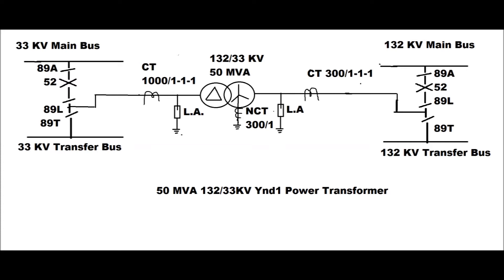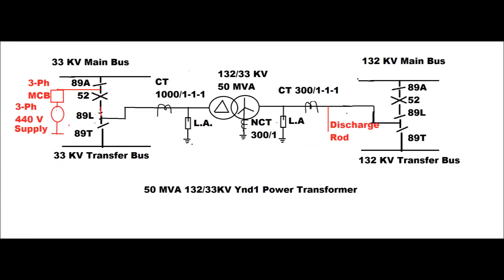The CT full load current for HV is approximately 219 amperes and for LV approximately 875 amperes. The CT ratio for the neutral CT is 300/1. For the stability test arrangement, a three-phase 440 V supply is given by means of an MCB before the 33 kV circuit breaker. The line isolator has been closed, while all HV side isolators remain open. Three discharge rods are taken after the CT and shorted together. The circuit breaker is then closed to check all currents in the secondary circuit.